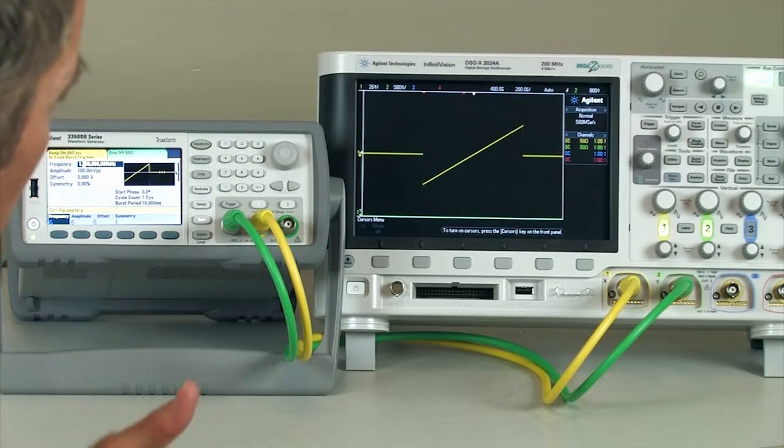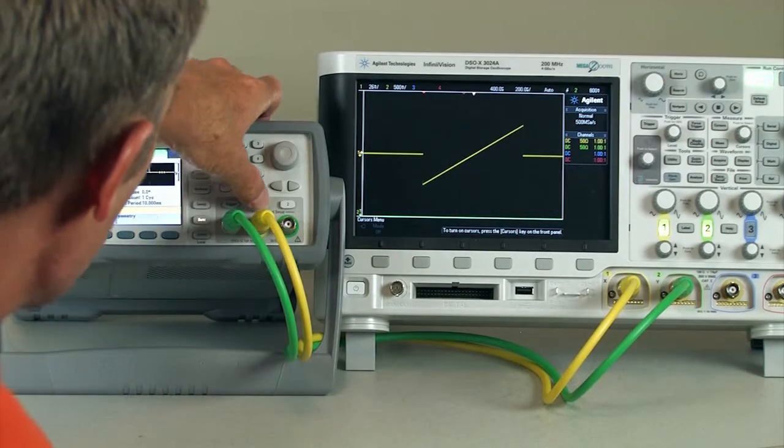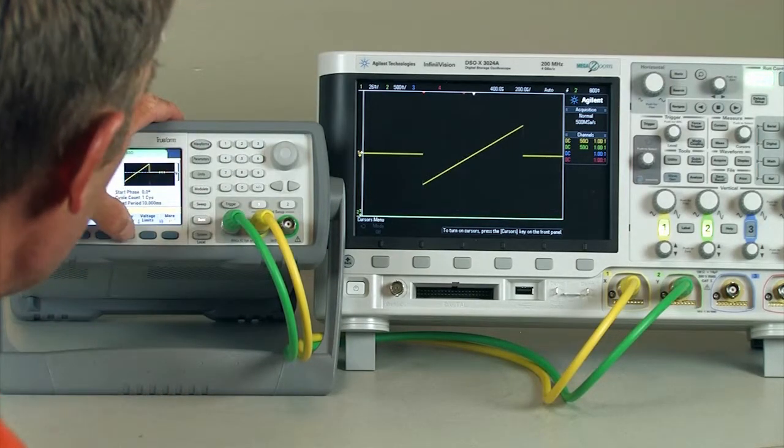Well, what if we want a continuous negative slope ramp? Well, the easiest way to do that is to invert the output. So I'll go ahead and make that change.